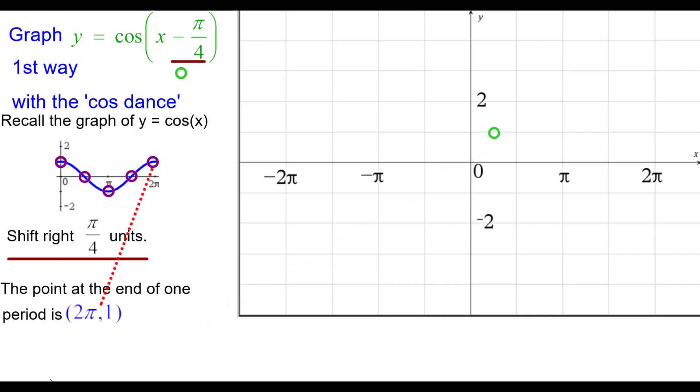At the end of the period is (2 pi, 1), but that shifted to the right to (9 pi over 4, 1), right there.